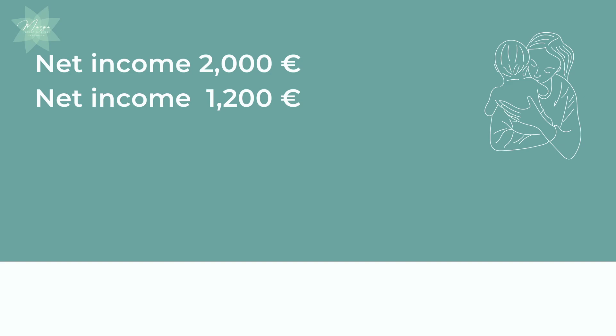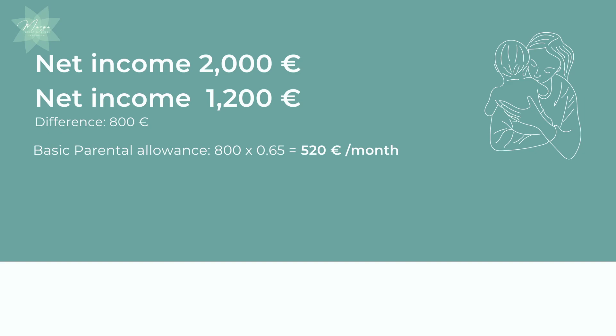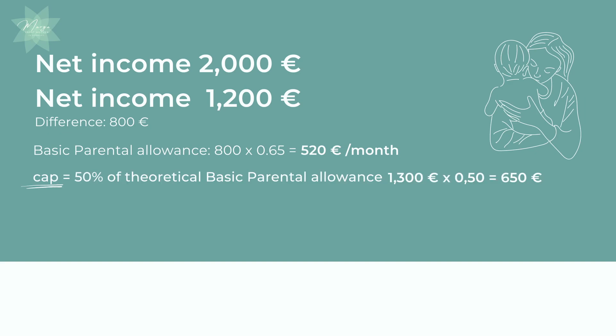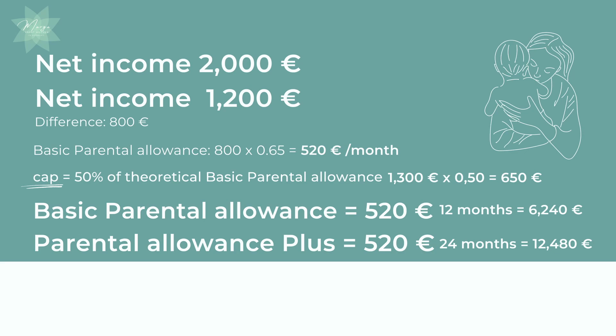In the first example, we calculate Parental Allowance Plus for the same mother with an income. She was receiving 2,000 euros before the child's birth and is now receiving 1,200 euros after, because she's working part-time. The difference is 800 euros. For basic parental allowance, it would be 65% of that difference — 520 euros per month. In theory, basic parental allowance without any income would be 1,300 euros, and half of that is 650 euros. Since 650 euros is higher than 520 euros, the cap does not reduce the Parental Allowance Plus. This means Parental Allowance Plus equals the same amount as the potential basic parental allowance with income — 520 euros — but you can receive it for twice as long.